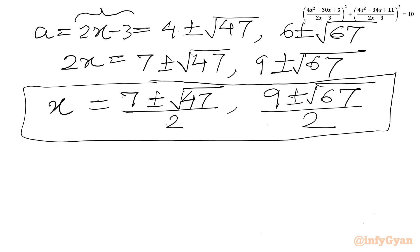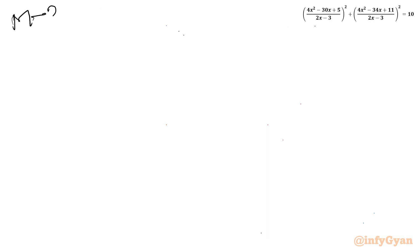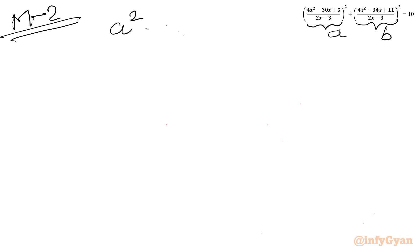Now I will share with you Method 2. This method is comparatively easy — let us see how it works. I will call the first expression A and this bracket I will call B. So the very first equation becomes A² plus B² equals 10.